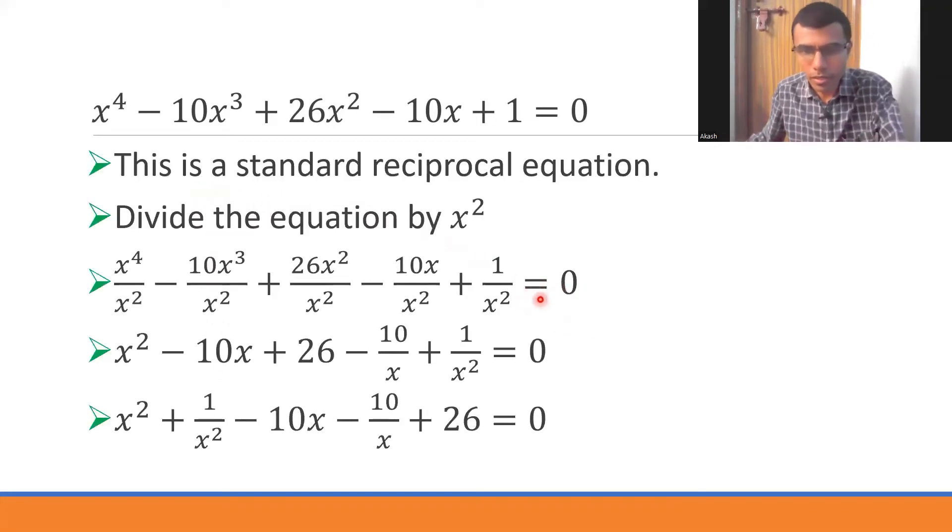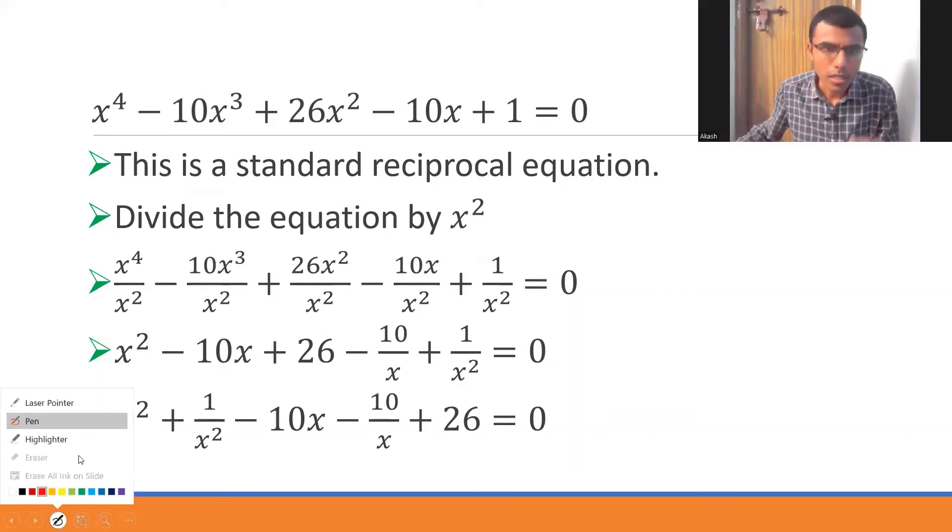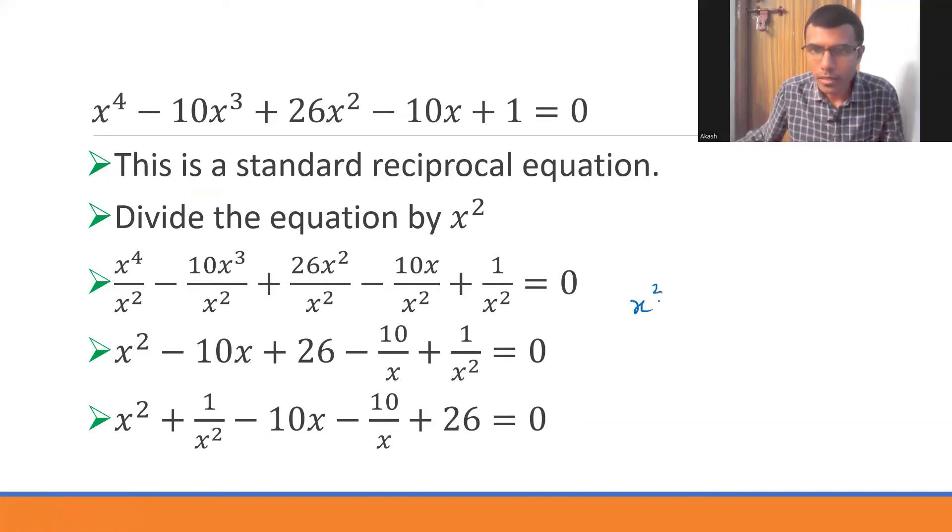Why it would happen? Because you see this one I can write as something like x² + 1/x² I can do +2 - 2. Now x² + 1/x² + 2, this 2 I can write it as x² + 1/x² + 2·x·(1/x) - 2. Now this is nothing but (x + 1/x)². This is nothing but (x + 1/x)².